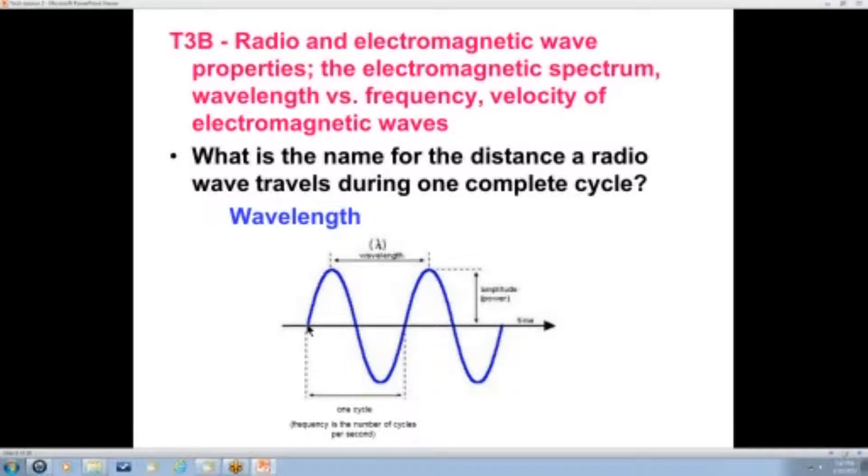Also, here is in terms of the frequency or the number of vibrations. This wavelength is also one cycle. So there's no real difference between one cycle and one wavelength. They're just drawn in different places here. But the wavelength is peak to peak is an easy way to think of it, or another really common way to think of it is from the zero crossing to the zero crossing. And the frequency is the number of cycles per second. So the distance a radio wave travels during one complete cycle is the wavelength.